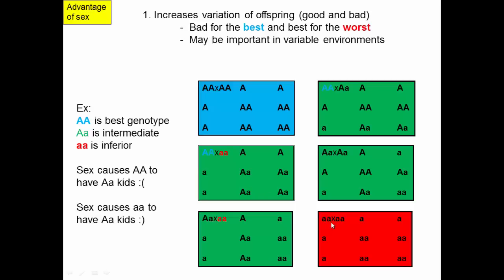On the other hand, lowercase a homozygotes mating with the same genotype produce all offspring with that bad genotype. But if they mate with a heterozygote, half their offspring are better than they are, and mating with the other homozygote makes all offspring better than if they had cloned themselves. So sexual reproduction is actually bad for the best individuals and good for the worst individuals. The net effect from the individual point of view is a wash — sometimes better, sometimes worse than self-reproduction.